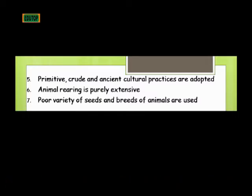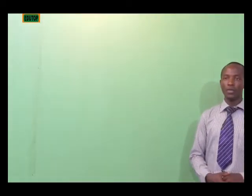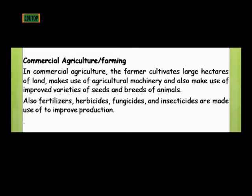In subsistence agriculture, only important varieties of seeds and breeds of animals are used. In commercial agriculture, the farmer cultivates large hectares of land, making use of agricultural machinery and improved varieties of seeds and breeds of animals, so that they can produce at a commercial level — enough to sell. Even after selling to the immediate environment, they have access to exports, and the quality of production is always high.